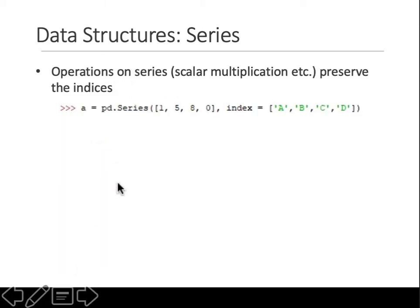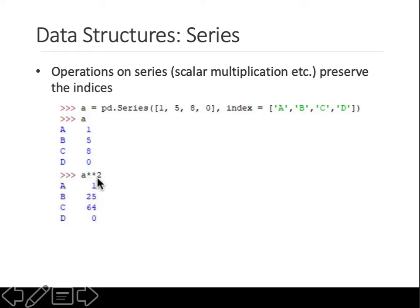Operations on these Series preserve the indices — if you perform any operation it will not change the indices. For example, if we raise the series to the power of 2, since pandas is built on top of numpy it behaves the same way: each member is raised to the power of 2, giving 1, 25, 64, and 0 to the power of 2 is 0.